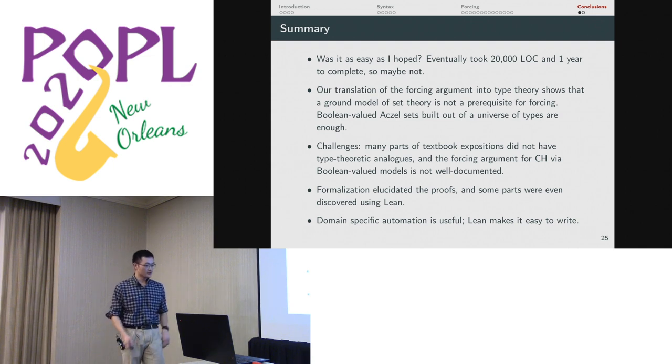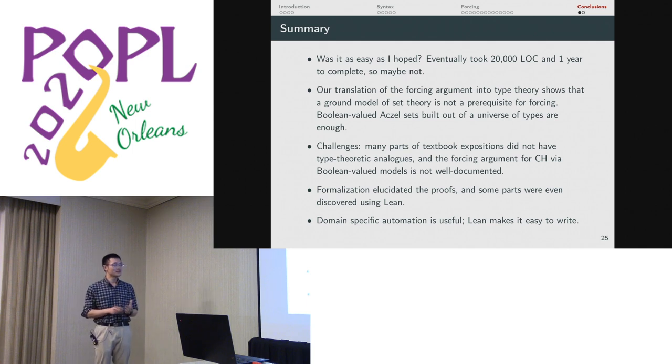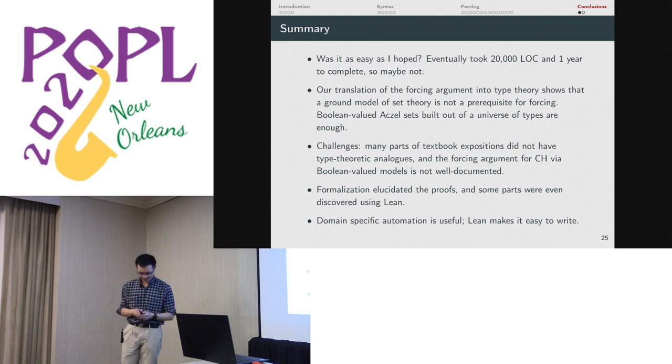So to sum up, when I first saw this problem, I thought it was going to be easy. Was it as easy as I hoped? Well, it took 20,000 lines of code in one year. So maybe not as easy as I hoped. One interesting aspect of this is that by translating this into type theory, we found that you don't really need a ground model of set theory to do forcing at all. You can just construct the Boolean-valued model of ZFC in one go. And you can just do the forcing argument there. You don't have to start with a model of ZFC.